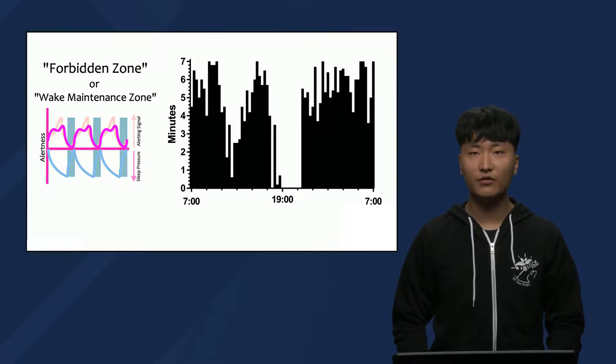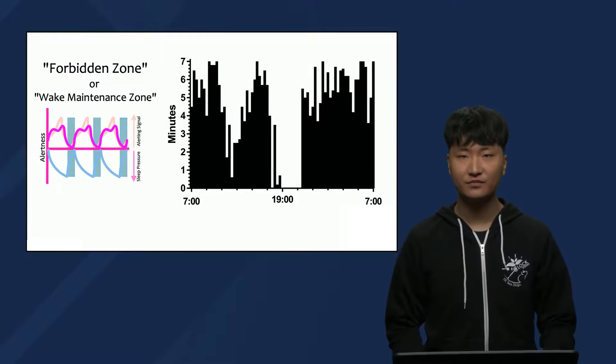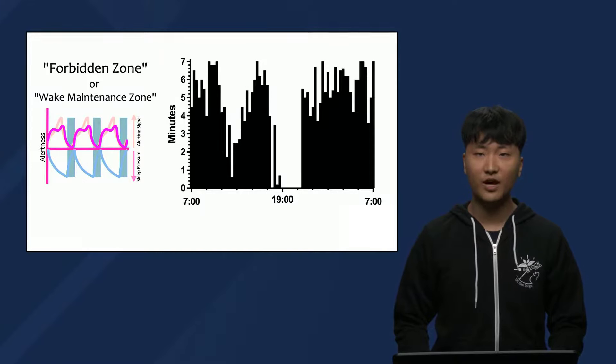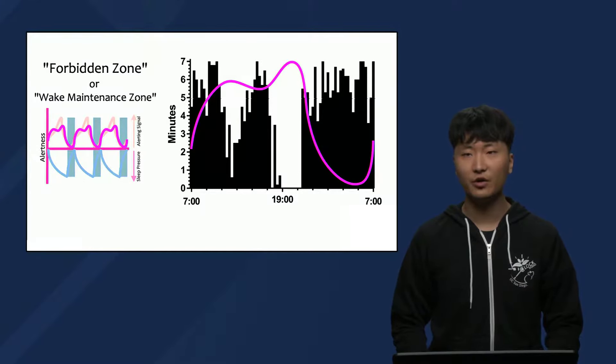Thinking about the two-process model for a moment, the existence of this forbidden zone maps onto the peak in your daily awareness rhythm. This helps explain why you're not exhausted from sleep pressure in the few hours before your bedtime.